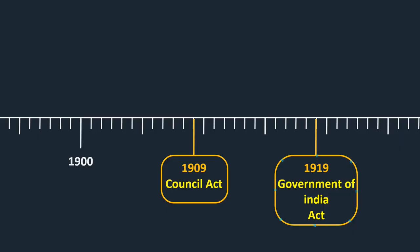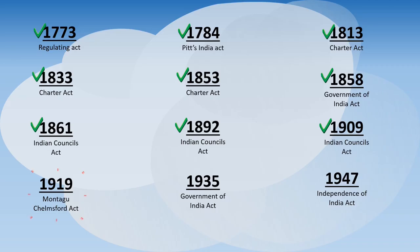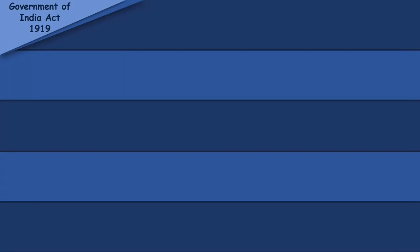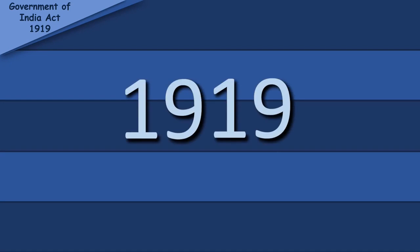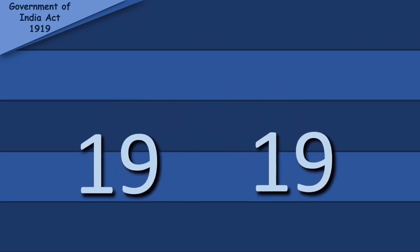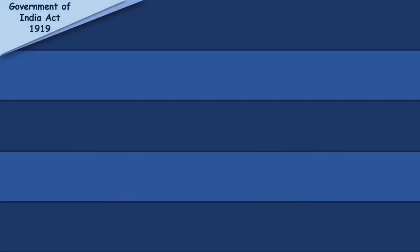Moving on, the next act is the Government of India Act of 1919, also known as the Montague-Chelmsford Act. There were five key provisions of this act. Here is a trick to remember them: the year of this act is 1919, which you can divide into two equal halves — and that is the theme. Everything in this act is divided into two equal halves.